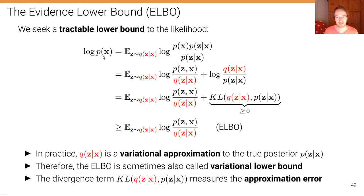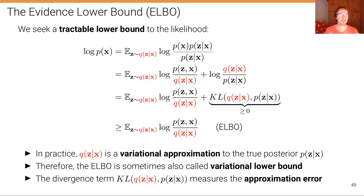The ELBO — the Evidence Lower Bound — is a lower bound to the data log likelihood due to this inequality, and as we'll see, this lower bound is now tractable. In practice, q is a variational approximation to the true posterior, represented by a family of functions parameterized through a neural network, so this is considered a variational problem. The ELBO is therefore sometimes also called a variational lower bound. The divergence measures the approximation error between the recognition model and the true posterior, but that is intractable to compute.